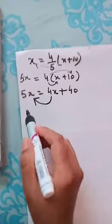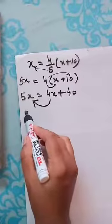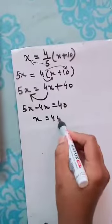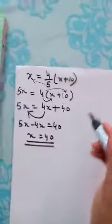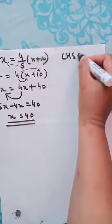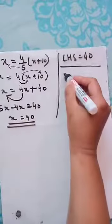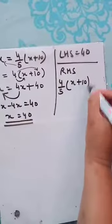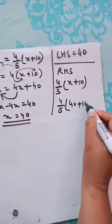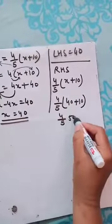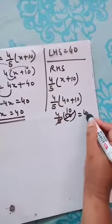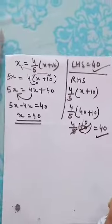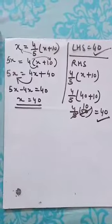Now this has to be shifted. Why are we shifting? Because we have to bring the variables on one side. So 5x minus 4x is equal to 40. So x becomes 40. Now I need to check whether my answer is correct or not. So I will put the value of x here. So LHS is 40. Because the value of x is 40. Now see what is there in RHS. RHS is 4 by 5 bracket x plus 10. So 4 by 5 bracket 40 plus 10. 40 plus 10 is 50. So when you multiply, you get 10. So 4 times 10 is 40. That means LHS and RHS verified.